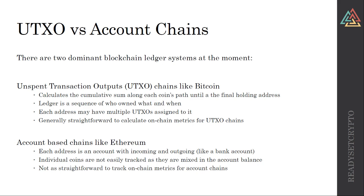Here's a quick idea of how you actually calculate the realized cap. There are two dominant types of blockchain ledgers: UTXO (Bitcoin), which is unspent transaction outputs, and account-based chains like Ethereum. For UTXO, you look at each coin from the point it's first mined and track the path it follows to different addresses. It's basically a cumulative sum — where do those coins end up? Each address may have multiple UTXOs assigned to it, and it's generally straightforward to calculate the realized cap for a UTXO chain because it's just a sum from start to finish.